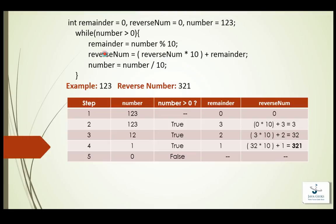This while loop will execute the block until the expression evaluates to false — as long as the number is greater than 0, this block will get executed. So remainder equals number mod 10. In step 1, we have number 123, and remainder and reverse number initialized as 0. In step 2, the control goes to the expression: number greater than 0 — 123 is greater than 0, that is true, so control goes into the block. Remainder equals number mod 10, so 123 mod 10: remainder becomes 3.